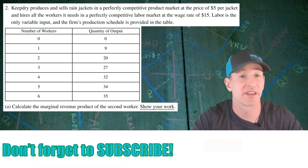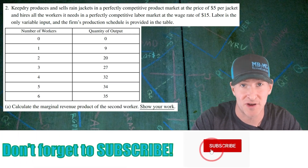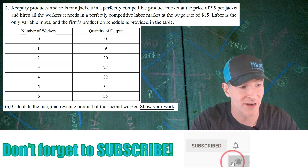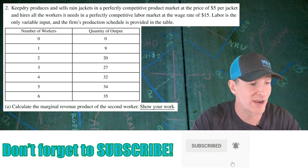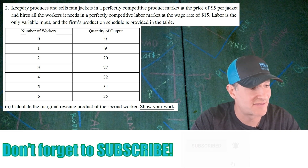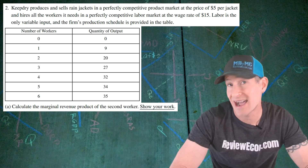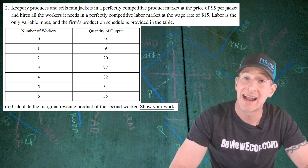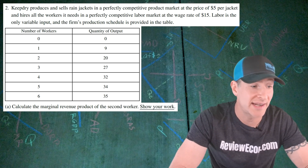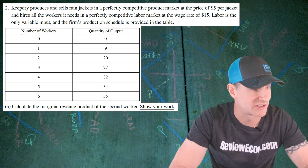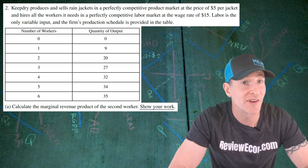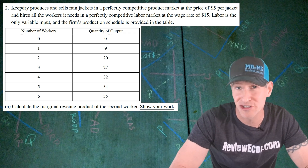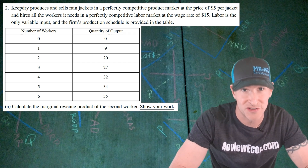This question starts off with a company called Keep Dry. They sell rain jackets in a perfectly competitive product market. The price of their rain jackets is $5. They hire all workers in a perfectly competitive market also, and their wage rate is $15. We are also told labor is the only variable input, and we have a production function that shows the production.